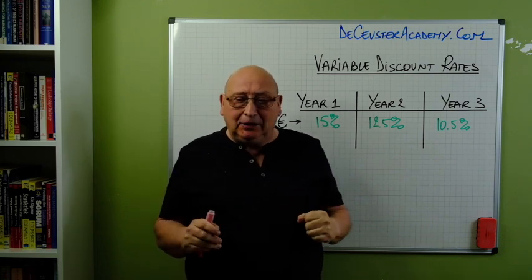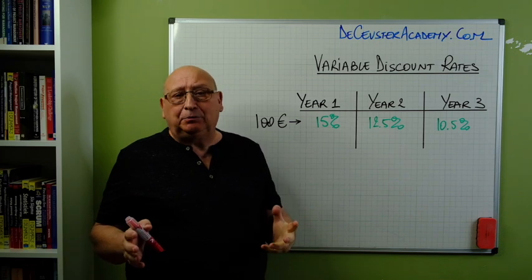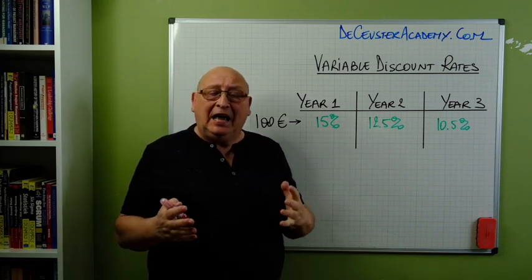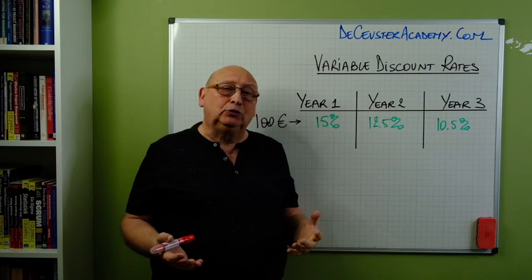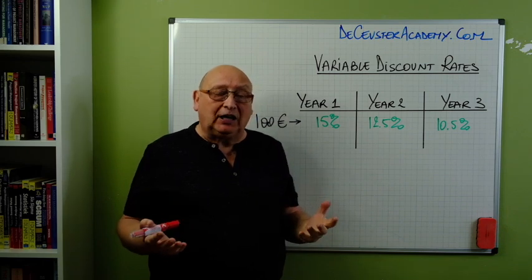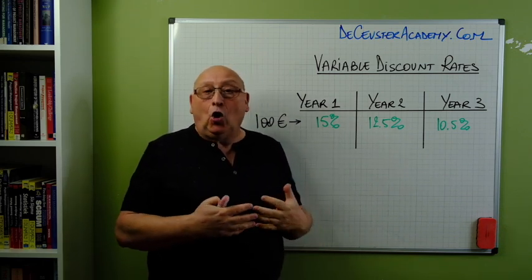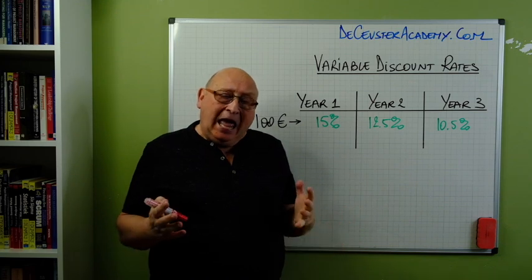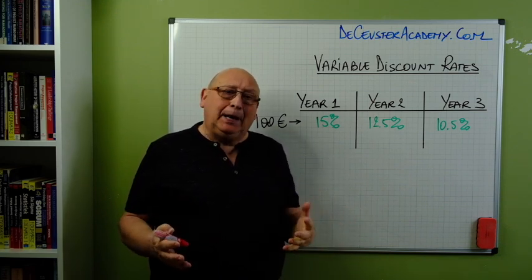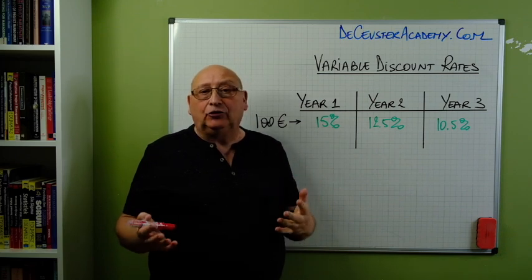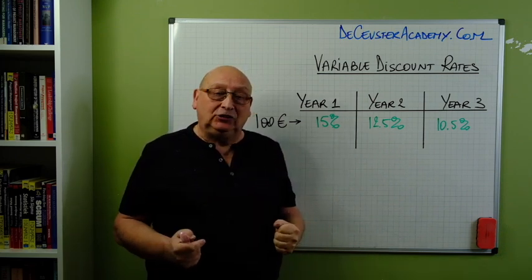In the previous examples we calculated the net present value and we assumed that the discount rate that we used for our calculations was constant over all the periods. One of my students asked me: what happens if the discount rate changes? How do we do these calculations?